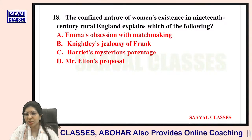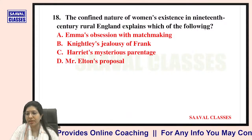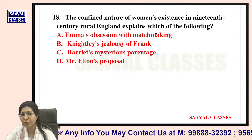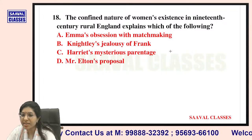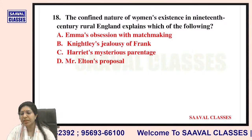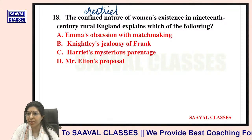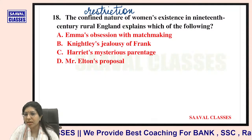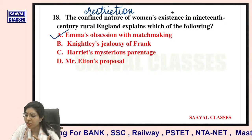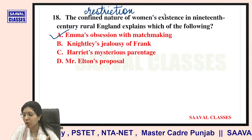Question number eighteen: The confined nature of women's existence in 18th century rural England explains which of the following? Options are Emma's obsession with matchmaking, Knightley's jealousy, Harriet's mysterious parentage, or Mr. Elton's proposal. The answer is Emma's obsession with matchmaking — women had restrictions in rural England and she wanted to show she was capable of doing something on her own.